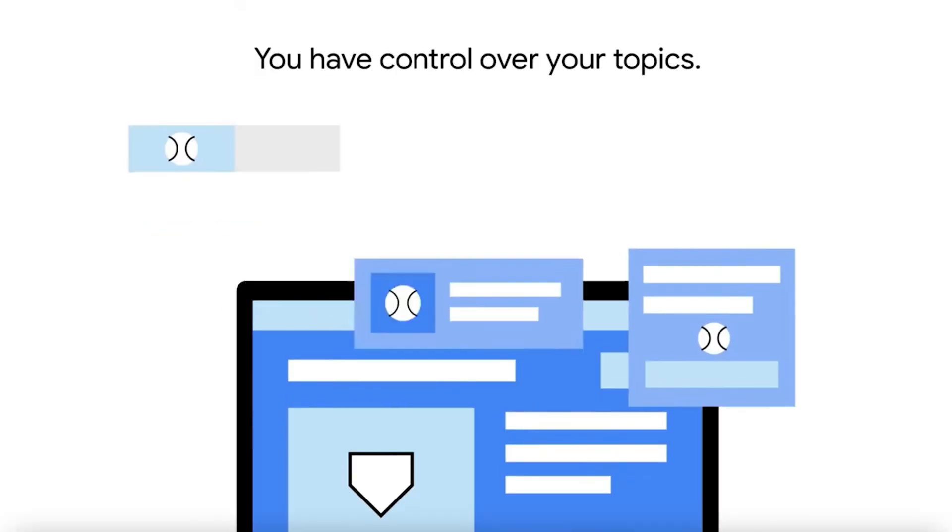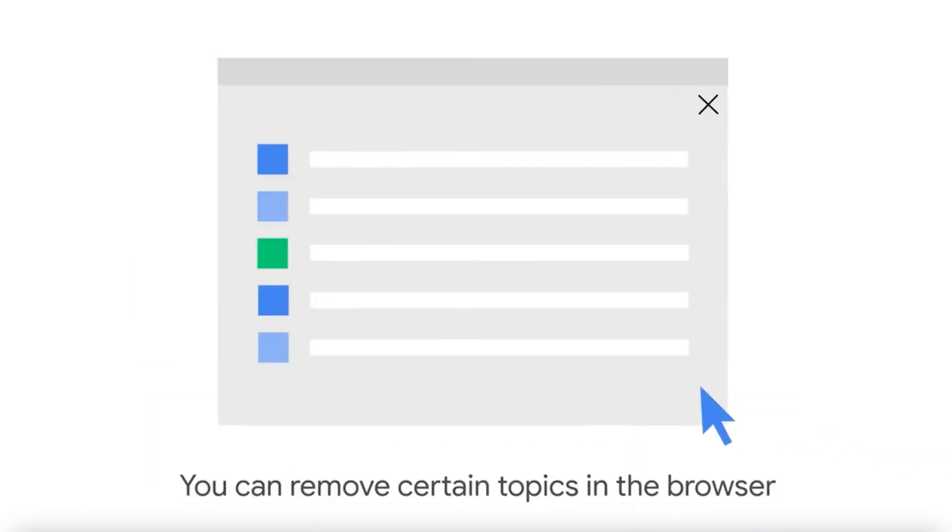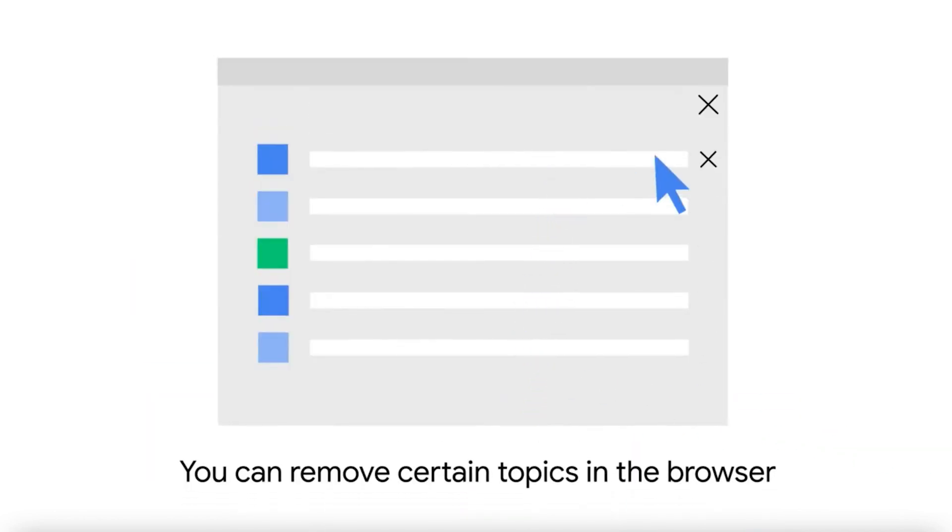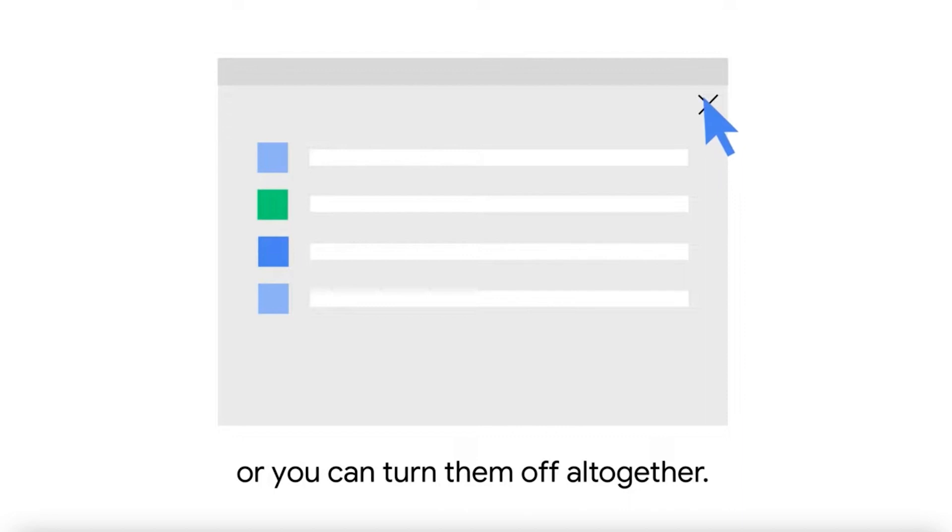So each user will have five topics at a time, with Google deleting and replacing the topics every three weeks. You will be grouped together with people that have the same interests so that you blend in with the crowd. Google also says it will send a randomized topic along with your profile to try and keep things anonymous, and it will do that about 5% of the time. The data will be stored on user devices too, so it's not sent to the cloud for processing. You as a user will have control over your topics and you can remove some if you like, or you can opt out of this program altogether.